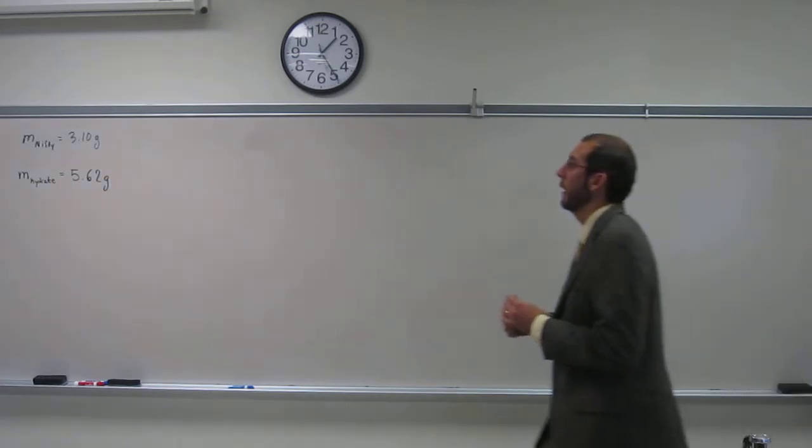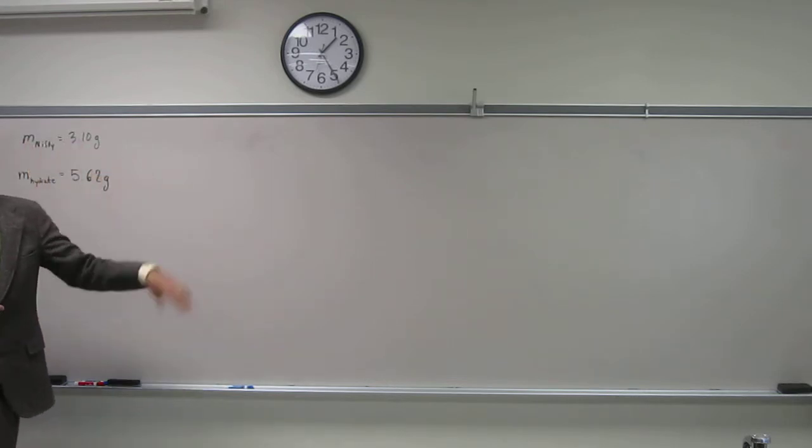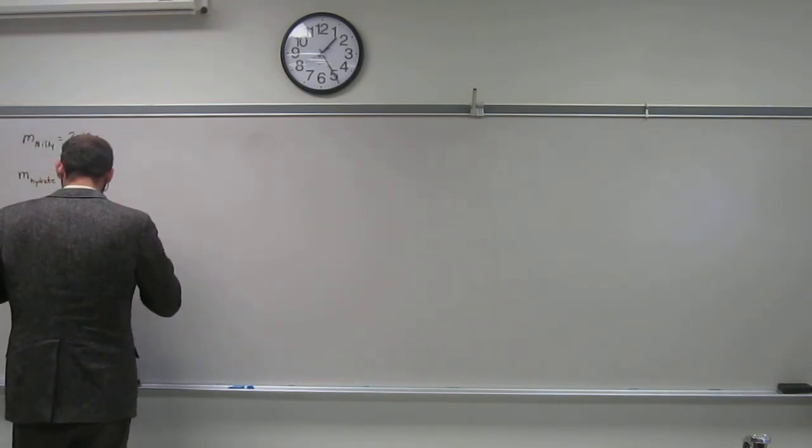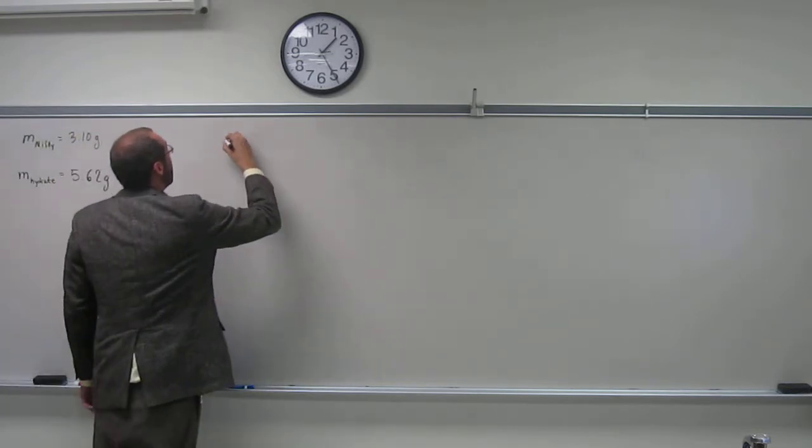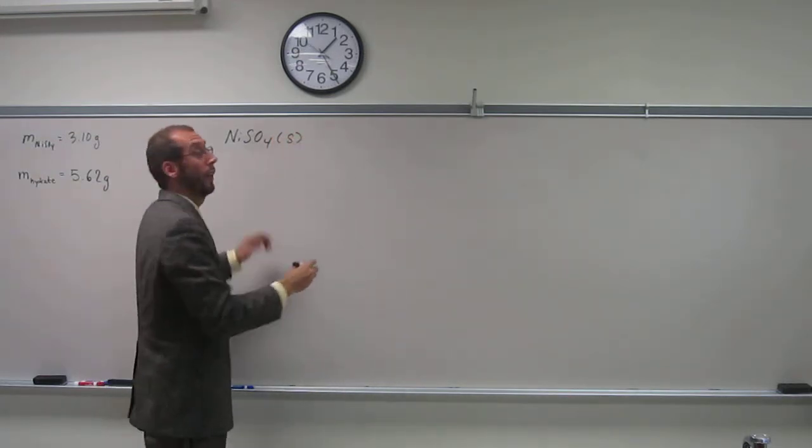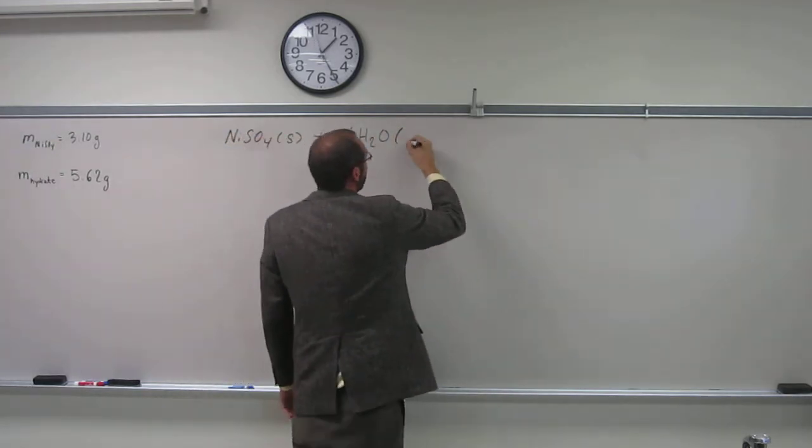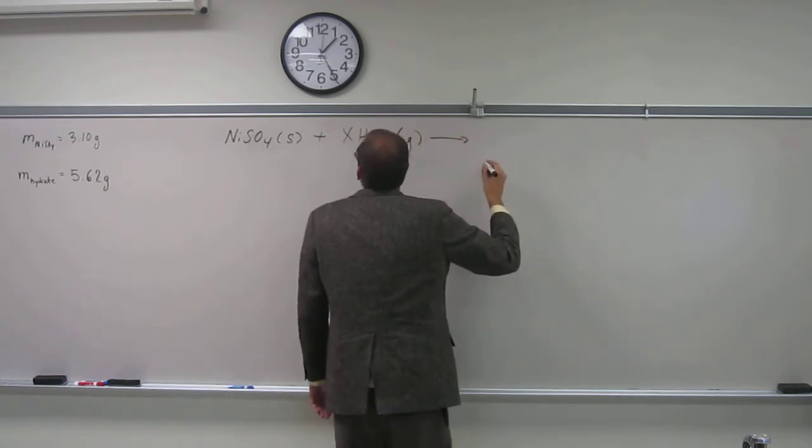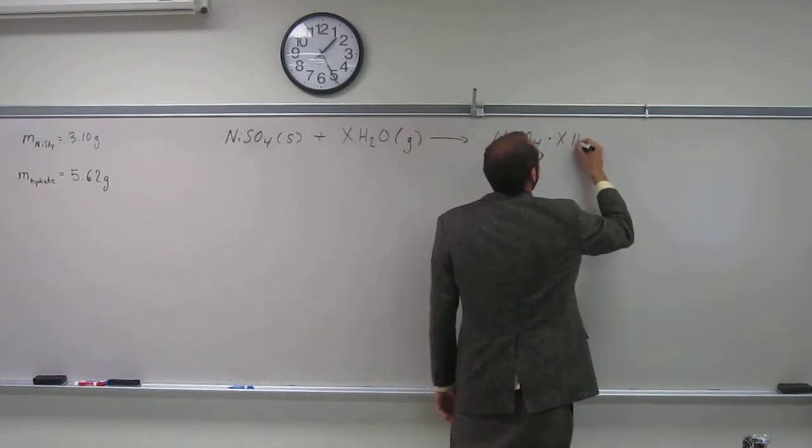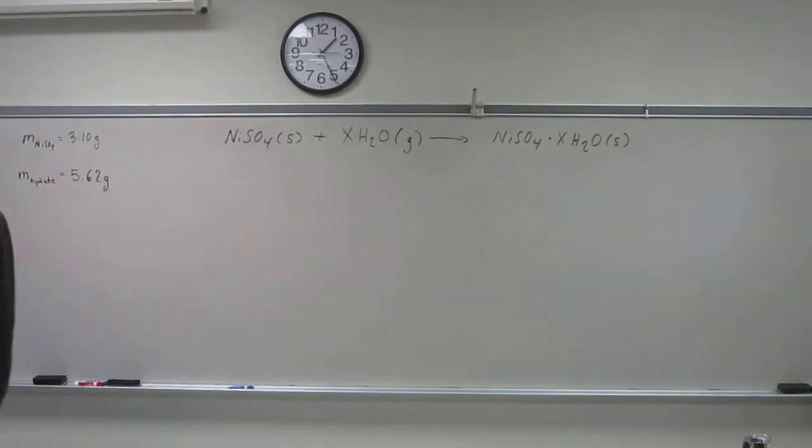So in order to do this, we have to understand that anhydrous nickel(II) sulfate means nickel(II) sulfate without the water associated with it. And it's going to make the hydrate as the product. We're going to have something like that, plus x amount of water gas, goes to nickel(II) sulfate hydrate. Does everybody understand that that's the equation we're going to be working with?